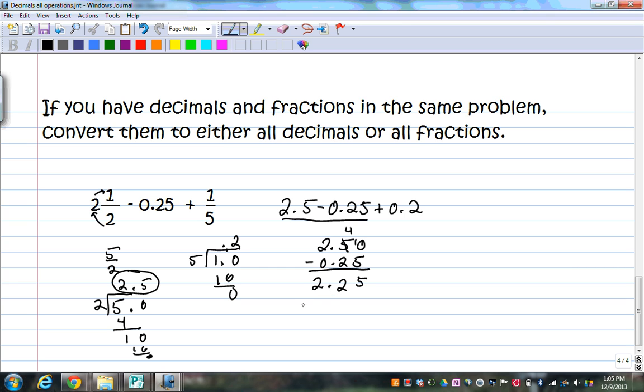Then, I want to add to that my 0.2. Fill in the space. 5 plus 0 is 5. 2 plus 2 is 4. There's a decimal straight down. And 2 plus 0 is 2. So, my answer is 2 and 45 hundredths, or 2.45. That is all. Goodbye.